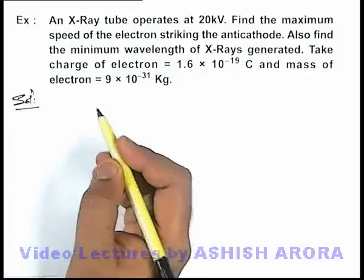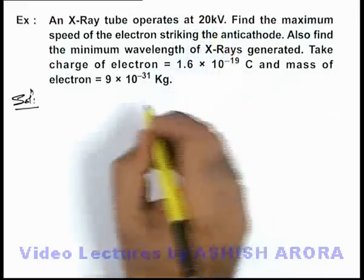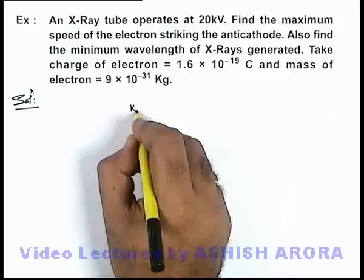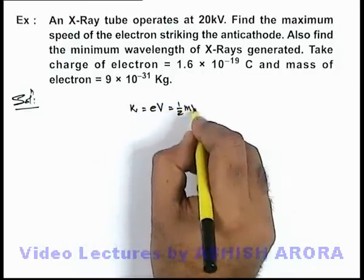In this situation, we know if an electron is accelerated at 20 kilovolts, the kinetic energy attained by the electron will be eV, which equals ½mv².